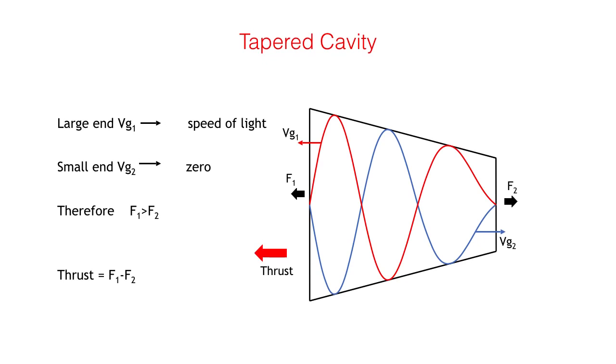Clearly the end forces in a constant diameter cavity will cancel each other out. However, if the cavity is tapered, the force at the larger end f1 will be greater than the force at the smaller end f2. A net force on the cavity will therefore exist, which we call thrust, where thrust = f1 - f2.